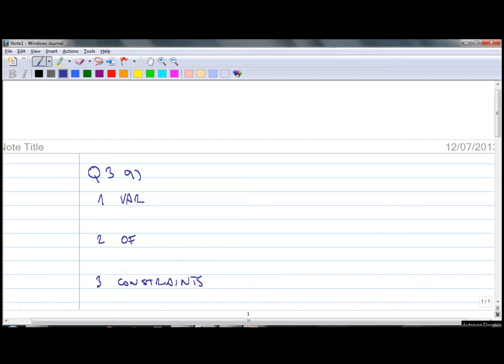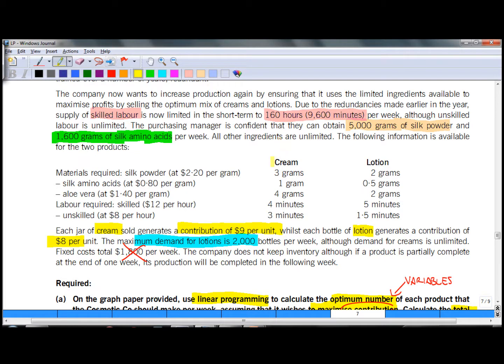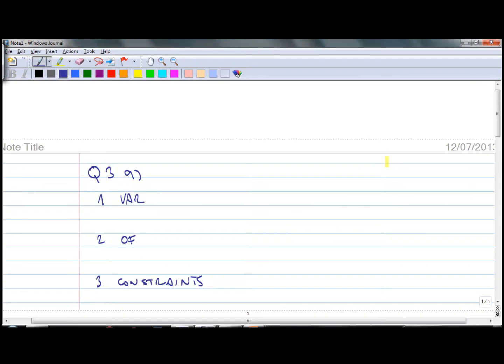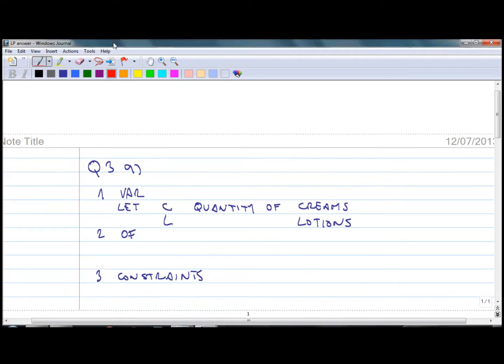Let's start with variables. As you remember, there are two variables: quantity of creams and lotions. Let's call them C and L. Next is the objective function, which has to be maximize contribution, which depends on the quantity of creams. Each cream earns 9 dollars of contribution, and quantity of lotions, which earns 8 dollars per unit.